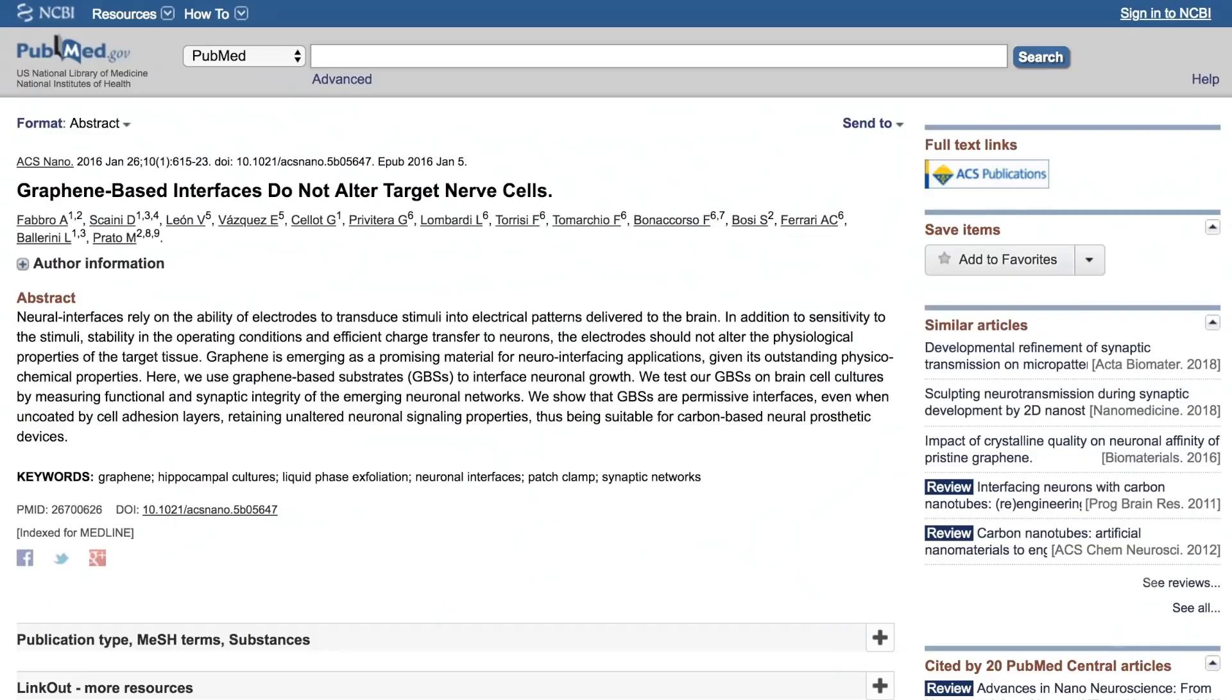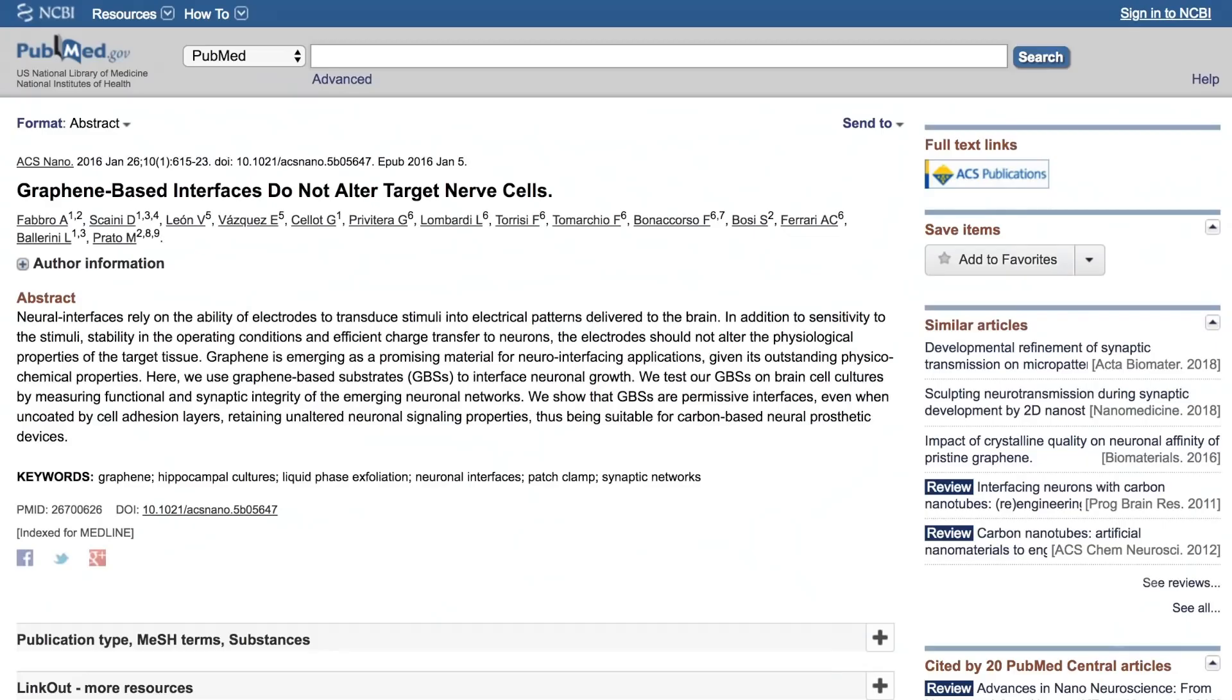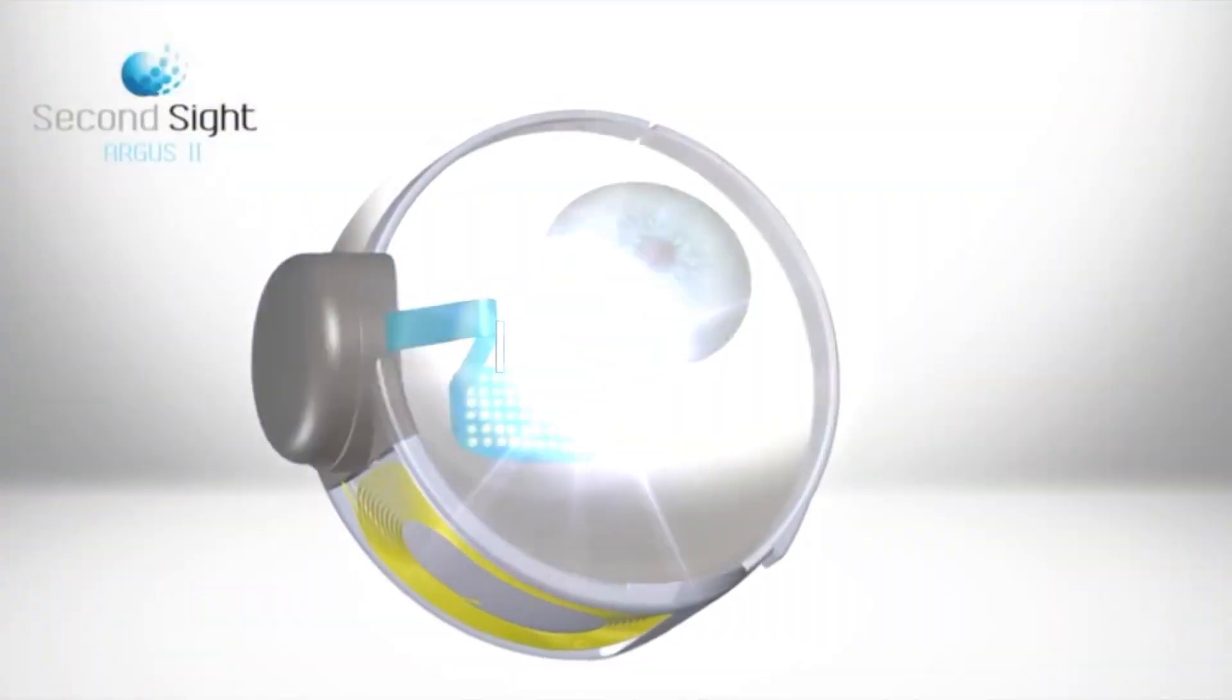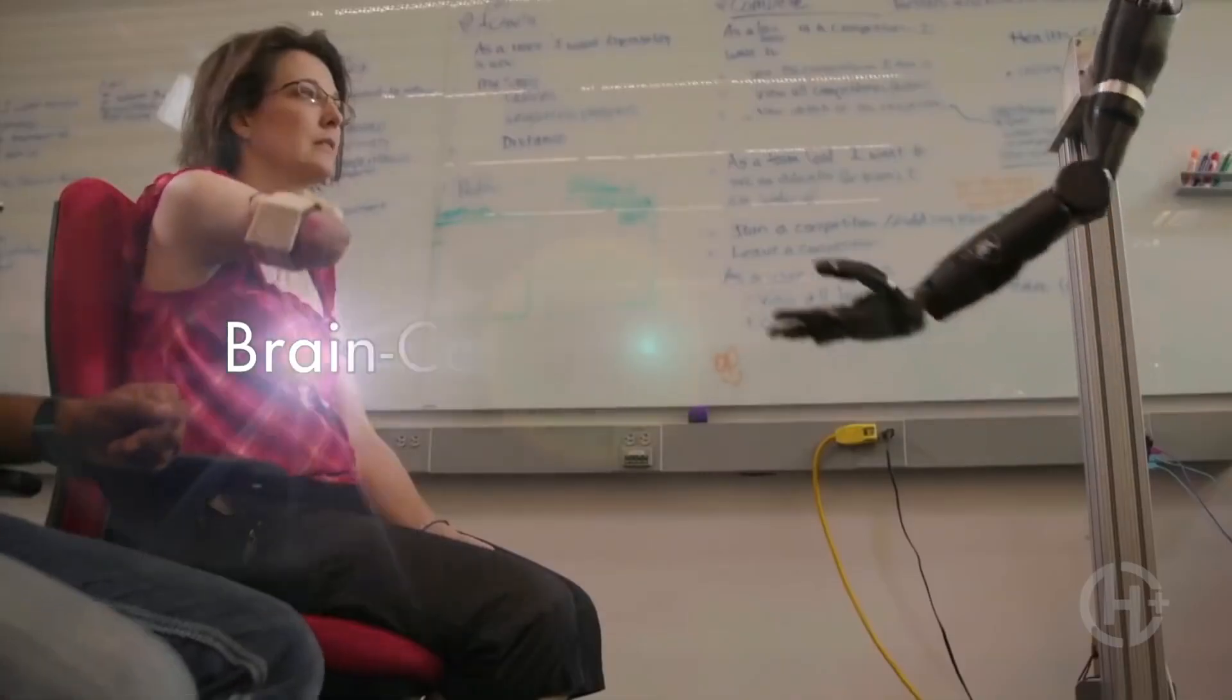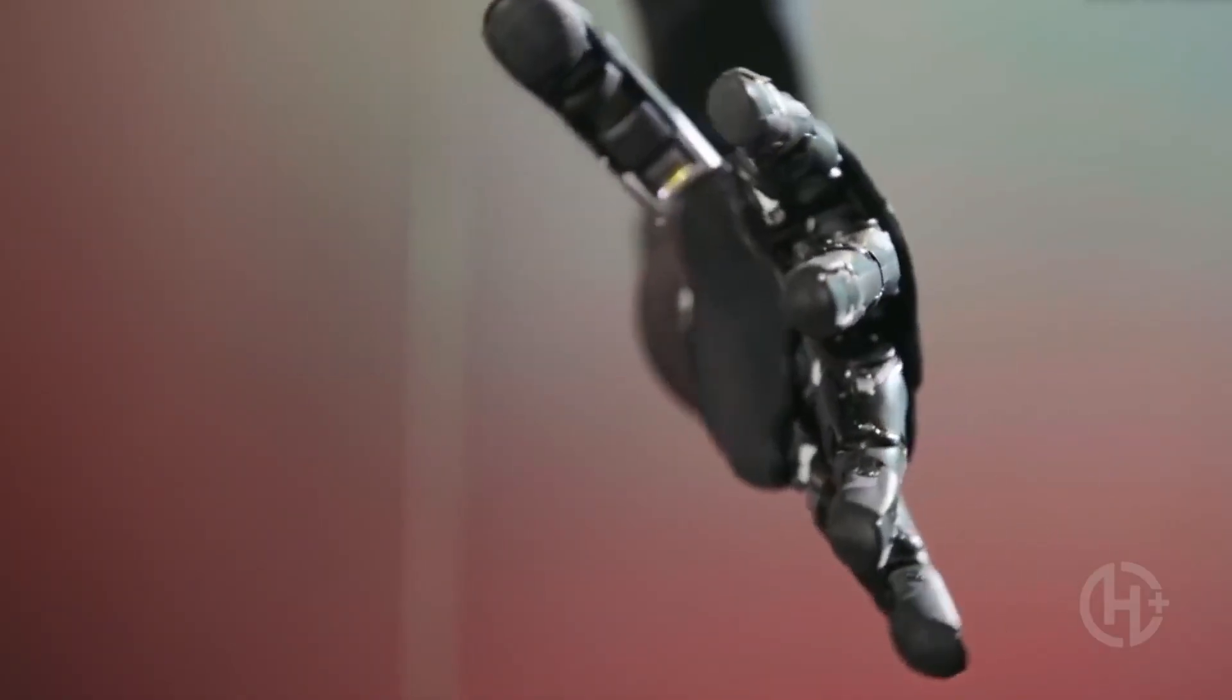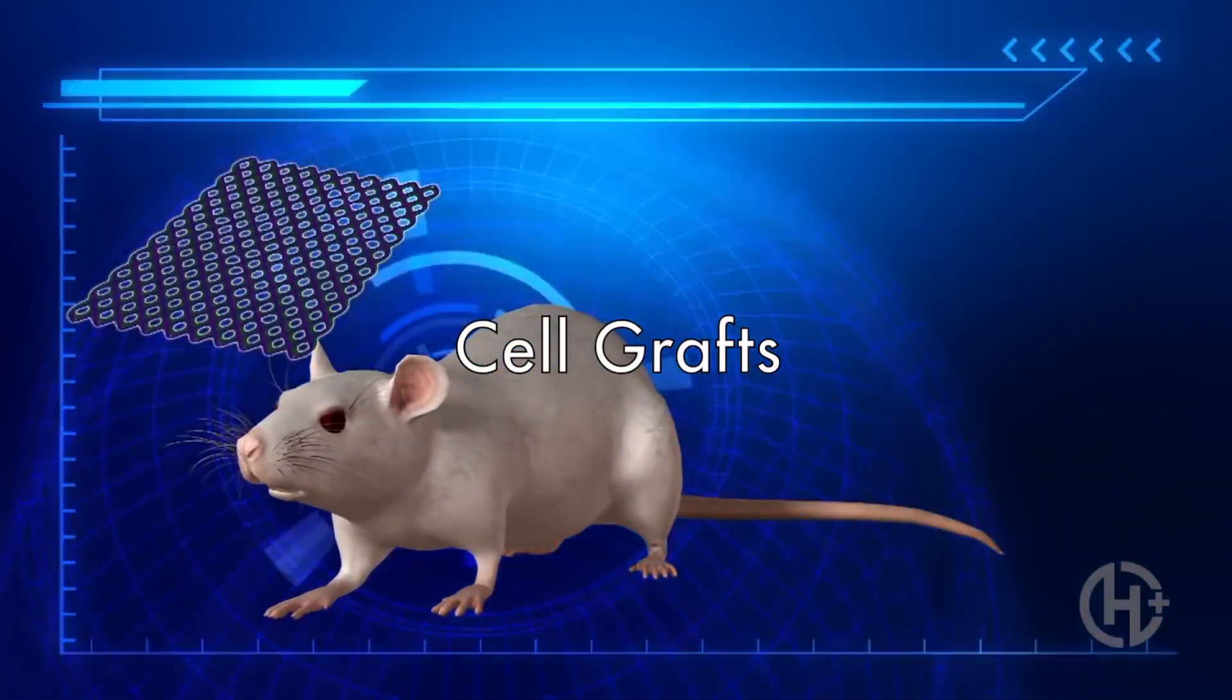And as we mentioned earlier, graphene also has high biocompatibility, which means it could be used in biomedical applications like implants, brain-computer interfaces, and cell grafts that could extend our lifespans.